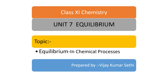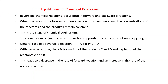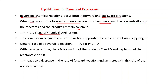Class 11th Chemistry, Unit 7: Equilibrium. In this video we will discuss about equilibrium in chemical processes. We have discussed that reversible chemical reactions occur both in forward and reverse directions. When the rates of forward and reverse reactions become equal, the concentrations of the reactants and products remain constant — this is the stage of chemical equilibrium. This equilibrium is dynamic in nature.